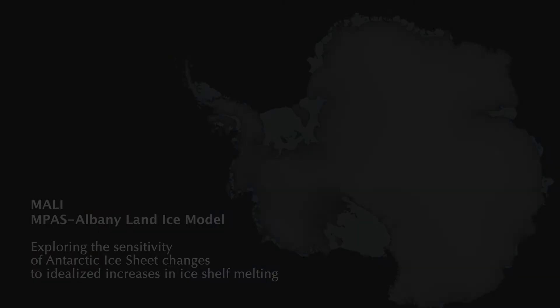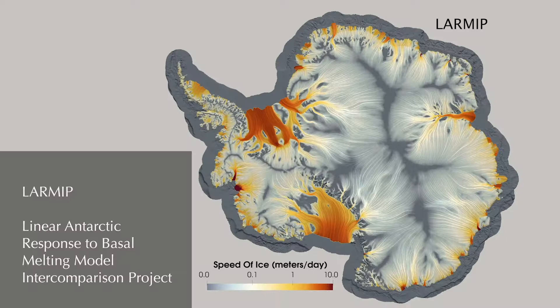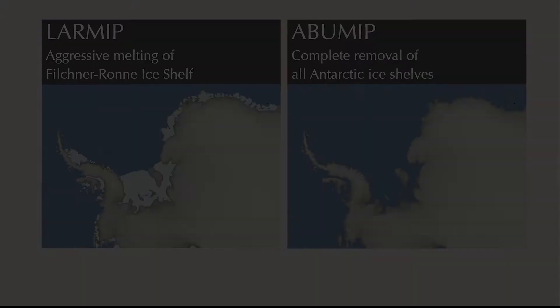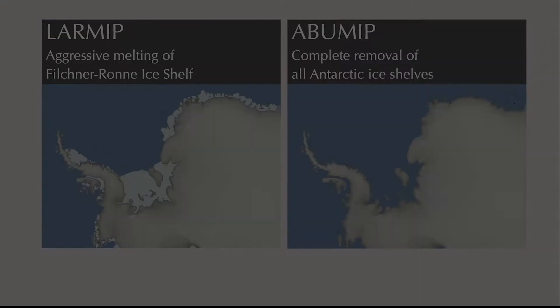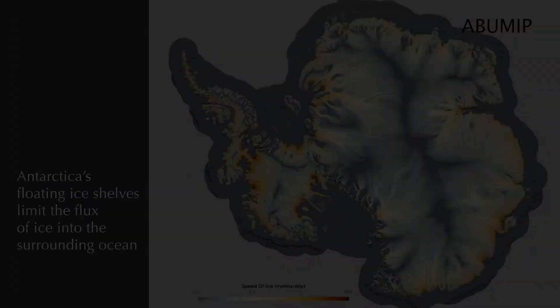Further study is needed to model the combined ocean and ice shelf system together in its full complexity. We explore the sensitivity of Antarctic ice sheet changes to idealized increases in ice shelf melting using MALI, the MPAS Albany Land Ice model. Simulations conducted as part of the Linear Antarctic Response of Basal Melting Model Intercomparison Project, or LARMIP, explore how warmer ocean waters flowing into the cavity beneath the Filchner-Ronne ice shelf impact Antarctic ice sheet evolution. An extreme scenario is explored with the Antarctic Buttressing Model Intercomparison Project, or ABUMIP, which simulates Antarctica's response to the instantaneous removal of all ice shelves. This is an upper bound on Antarctica's possible response to ocean-ice interactions. Visualizations from these two simulations demonstrate the importance of Antarctica's floating ice shelves at limiting the flux of ice into the surrounding oceans.